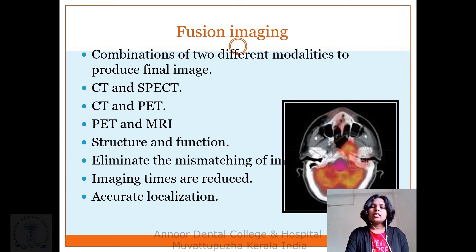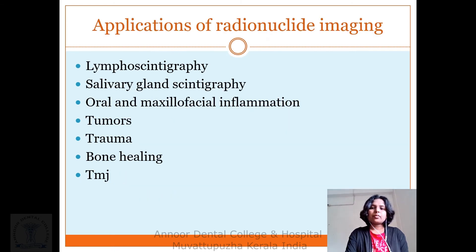Fusion imaging is a combination of two different modalities to produce a single image: CT and SPECT, CT and PET, or PET and MRI. It gives both structural and functional images, limits mismatching of images, reduces imaging times, and provides accurate localization.